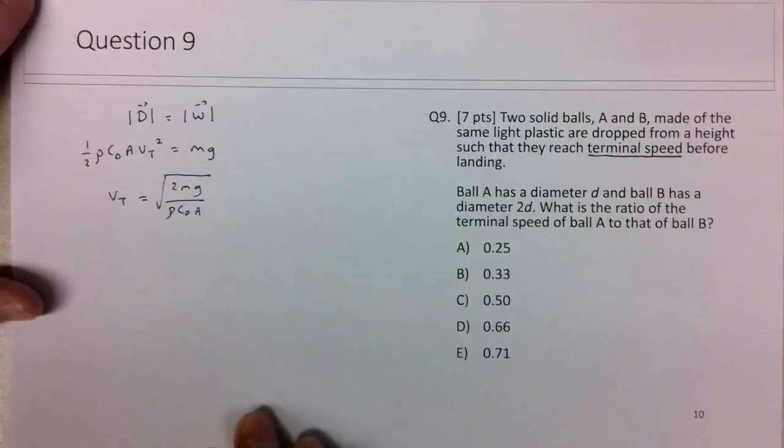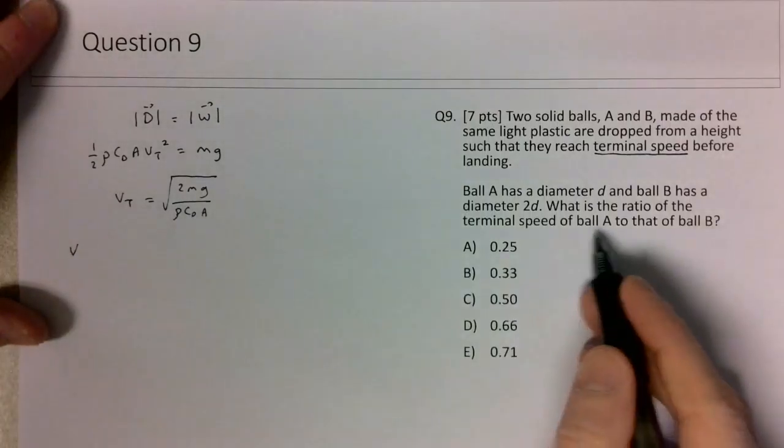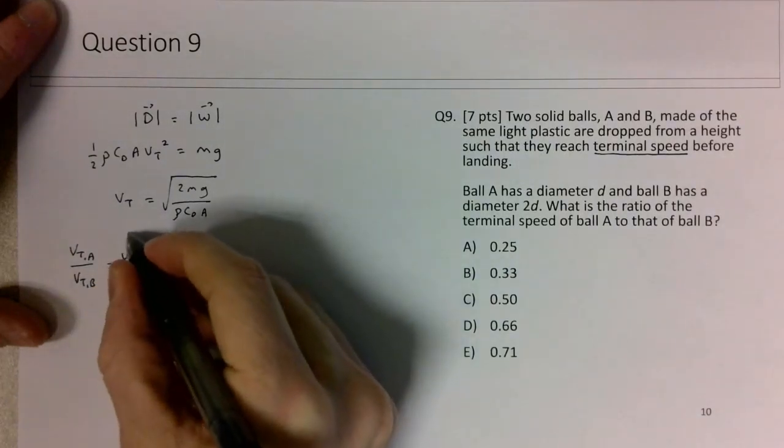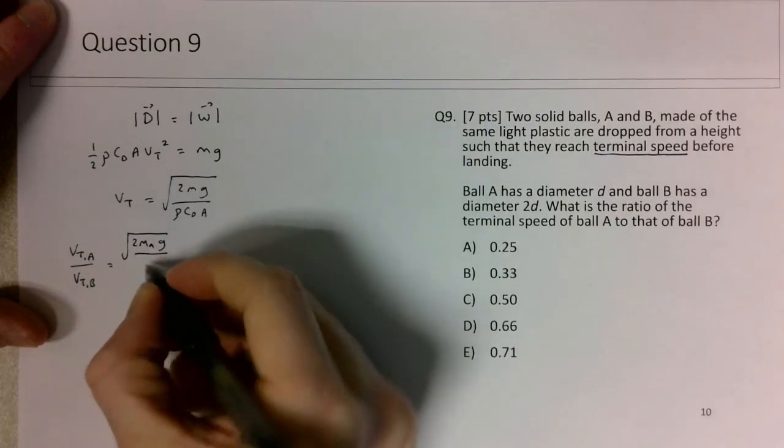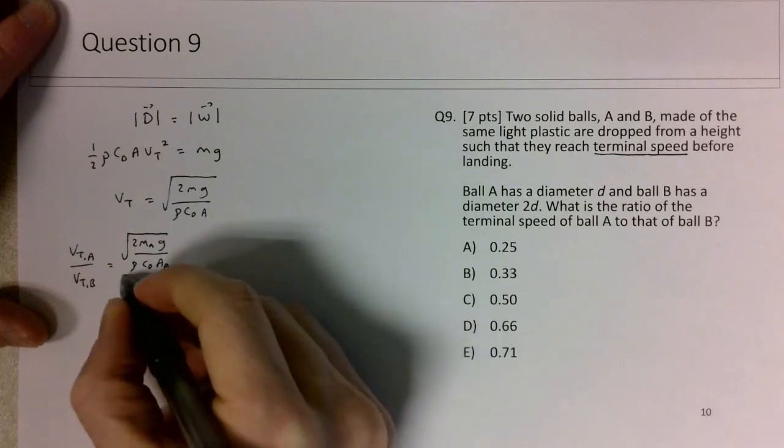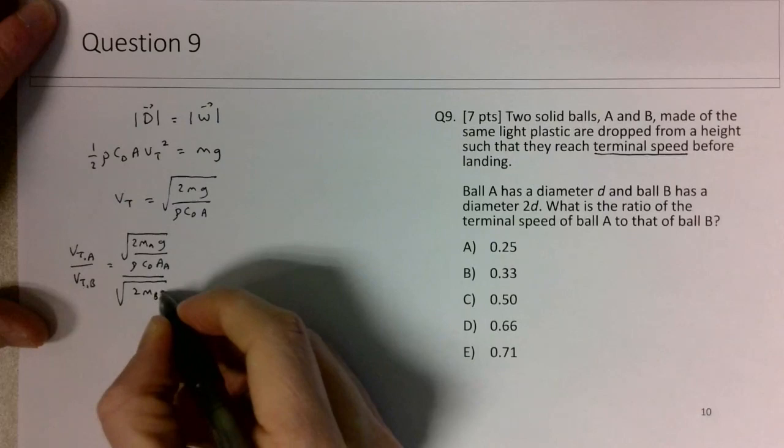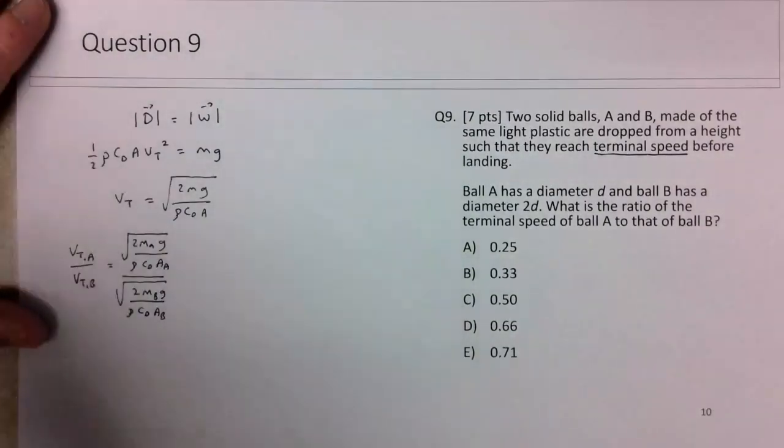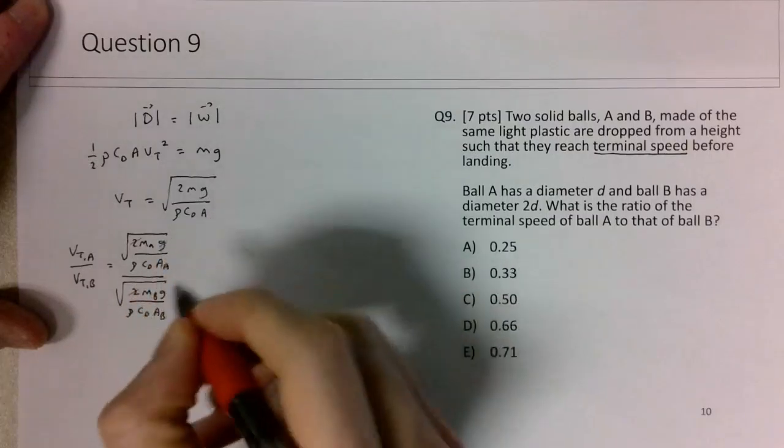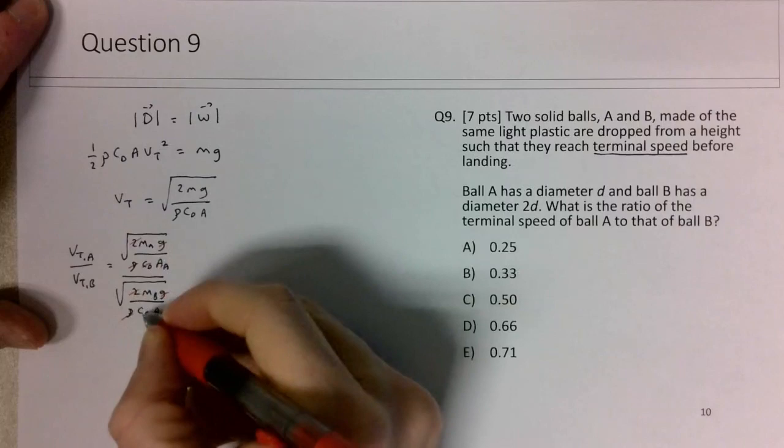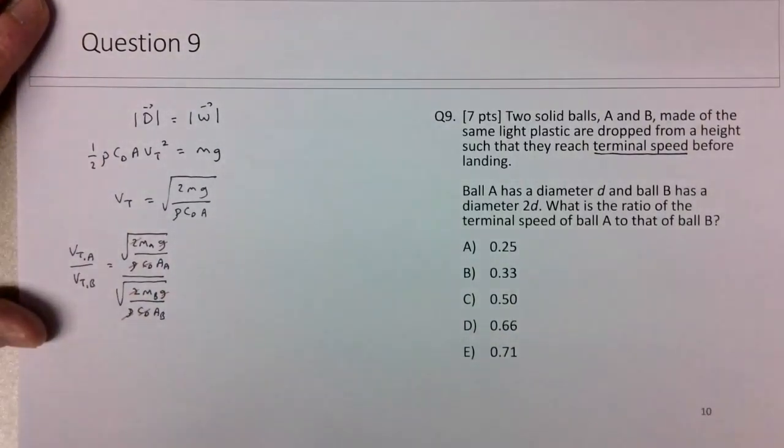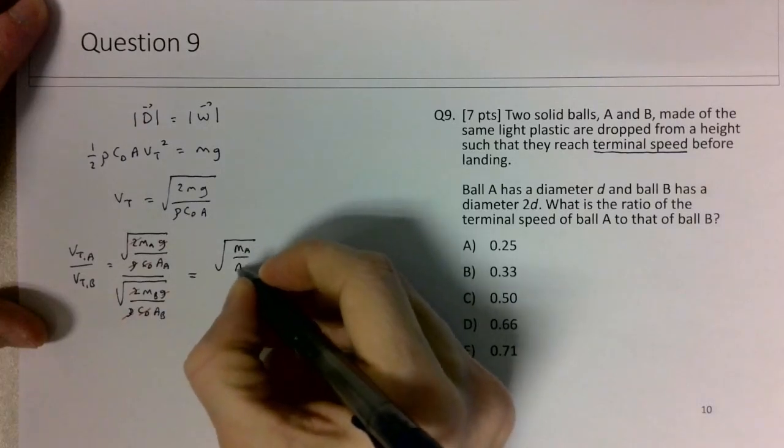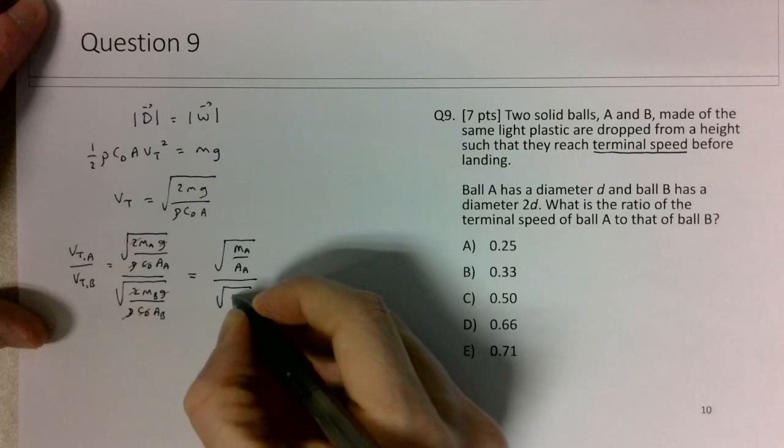If I take the ratio vt_A/vt_B, this will be √(2m_A g/ρcdA_A) divided by √(2m_B g/ρcdA_B). We can cancel a lot of common terms here: the 2, the g, the ρ, and the drag coefficient. They're both spherical balls, so they both have the same drag coefficient. We're really looking at √(m_A/A_A) divided by √(m_B/A_B).